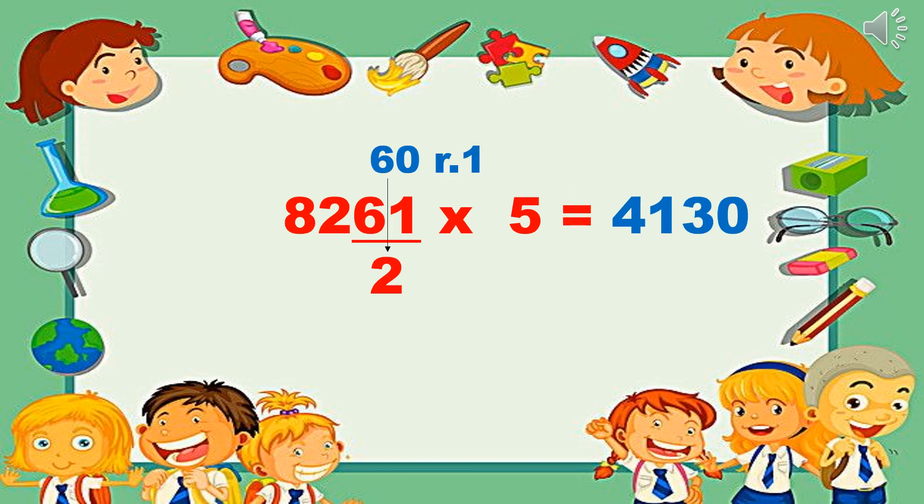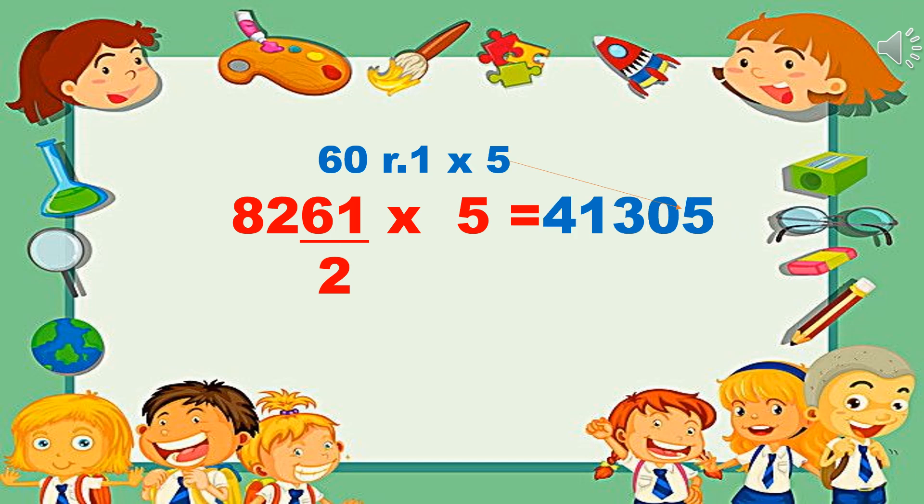We have 61, which cannot be divided evenly by 2, so we go down to 60. 60 divided by 2 or simply half of 60, we have 30. Remainder 1 times 5, our last digit is 5. Our answer is 41,305. Applying quick and basic steps.